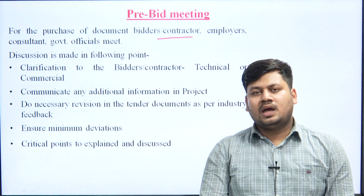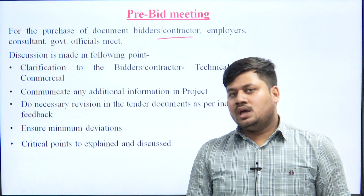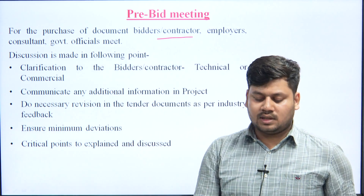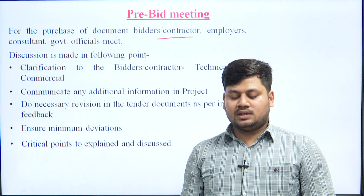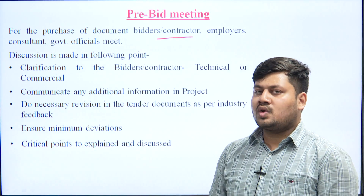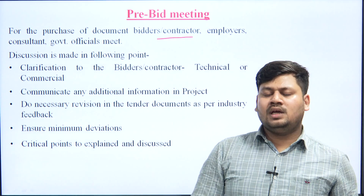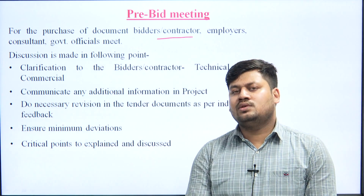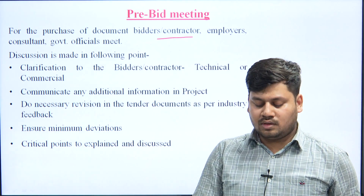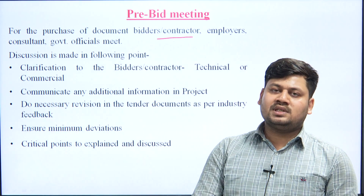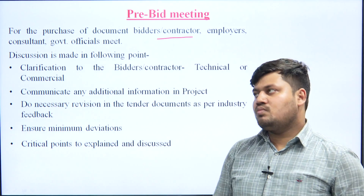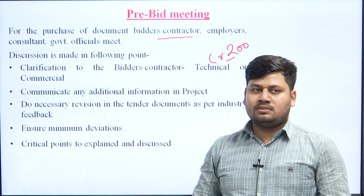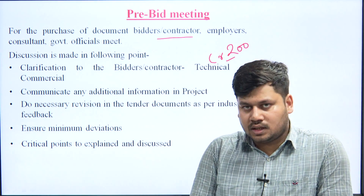The second point discussed is communication — any additional information about the project is shared. For example, if there is something about the land, or surrounding conditions. Also, necessary revision of the tender document is done as per industry feedback, so that both the owner and contractor clearly understand everything. The minimum deviation is also specified — for example, if the project cost is 200 crore rupees, they may say the deviation should not exceed 10%, meaning plus or minus 20 crore, so the cost should not go above 220 crore under any circumstances.